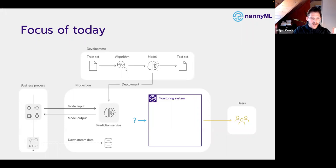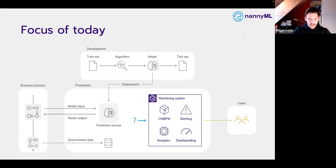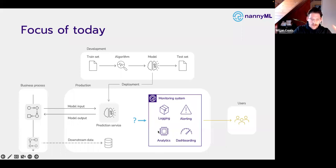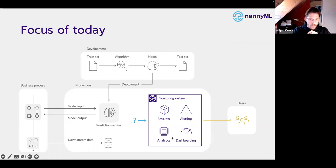Today we're focusing on what goes into the monitoring system from a data science perspective so we can assess model performance. Inside our monitoring system there are typically four components: logging the data, collecting it, the analytics part — which is performance estimation and data drift detection — tied to some alerting. If something is going down, we get notified and send alerts to users. We'd also ideally have a dashboard with reporting where we can explore data, do data science, and come up with a plausible root cause analysis.